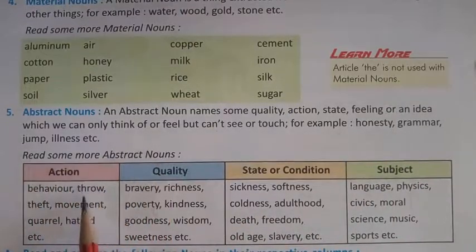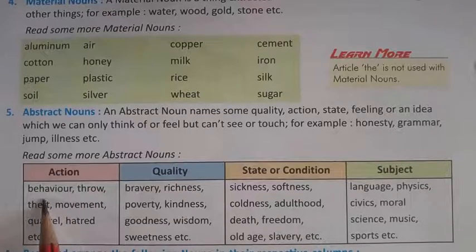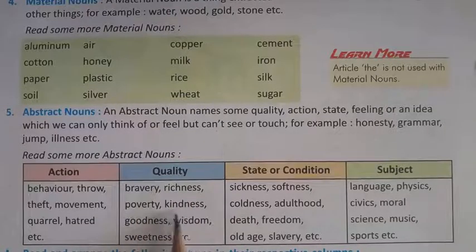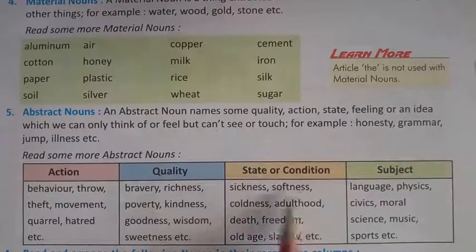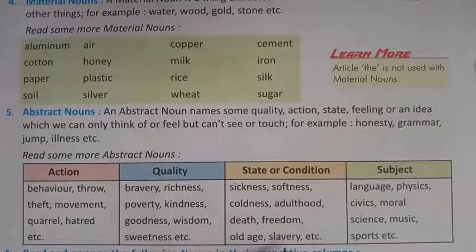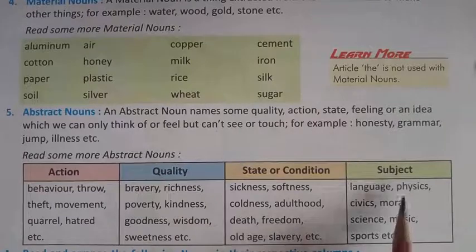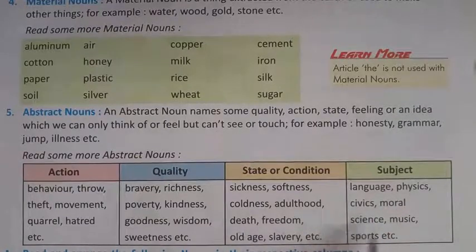Read some more abstract nouns. Action: behavior, theft, maturity, moment, peril, hatred, etc. Quality: bravery, richness, poverty, kindness, goodness, wisdom, sweetness, etc. State or condition: sickness, softness, coldness, adulthood, death, freedom, old age, slavery, etc. Subject: language, physics, civics, moral science, music, sport, etc. These are all abstract nouns.